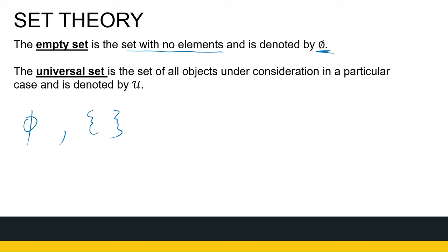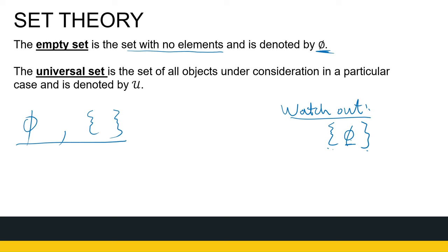Just watch out for the following: if I've got curly brackets with the ∅ symbol inside, this is not the empty set because there's something inside these curly brackets. There's a set inside the set, but that set is empty — it's like having an empty bag inside a bag. So watch out. These two notations — ∅ and {} — are the two denotations of the empty set.